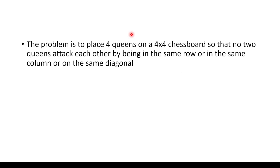The problem is to place 4 queens on a 4×4 chess board so that no 2 queens attack each other by being in the same row, the same column, or the same diagonal. This is the constraint we need to check.